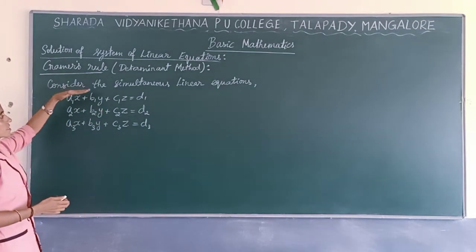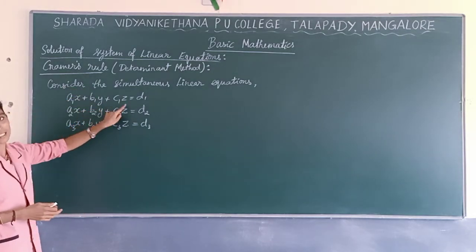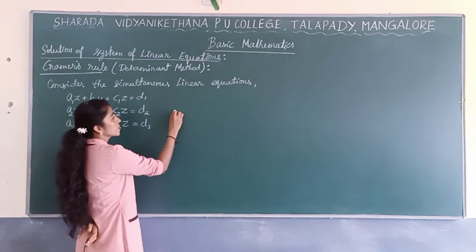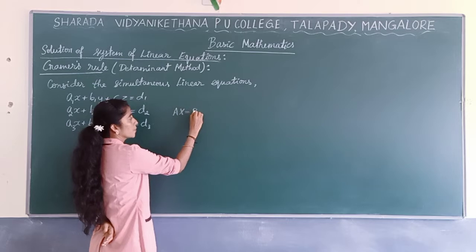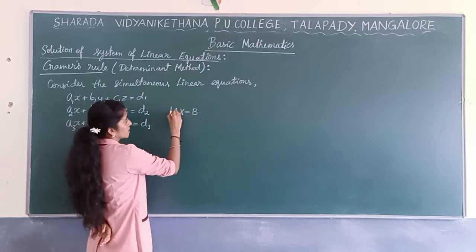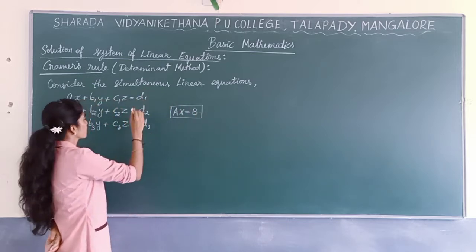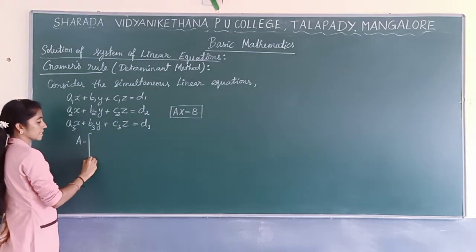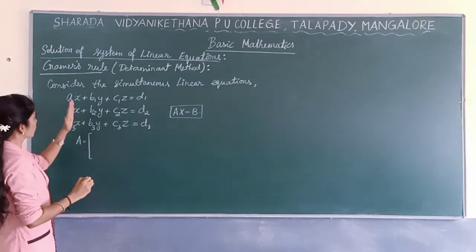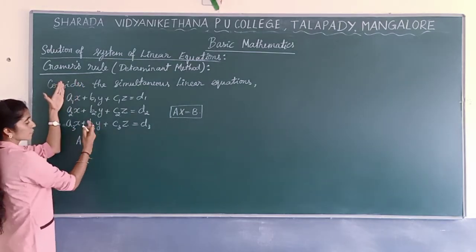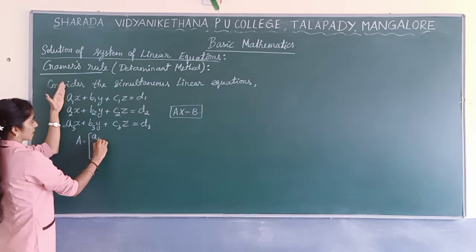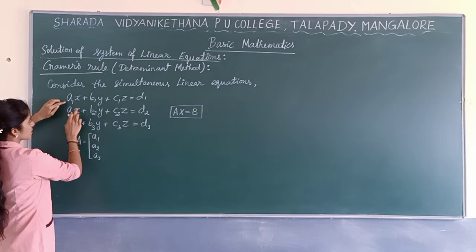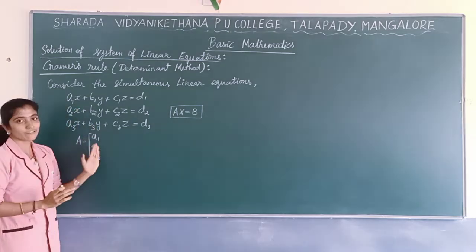I have considered the simultaneous linear equations with three variables. This system can be written as AX equals B. I write this simultaneous equation as matrix A. The coefficients of X I write as the first column, so it is A1, A2, A3 — these are the coefficients of X written in the first column.